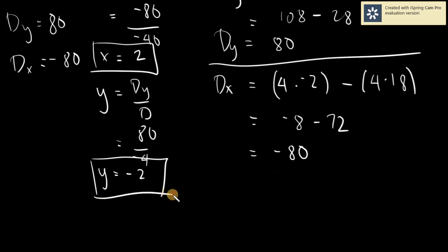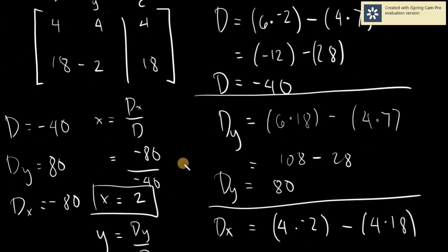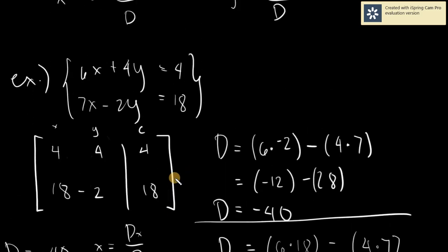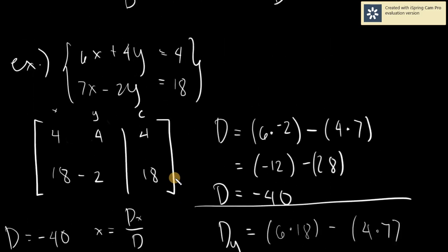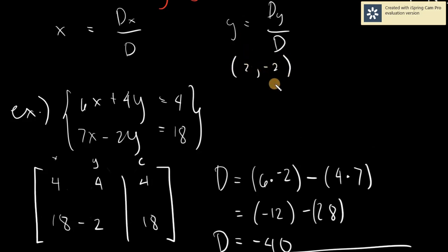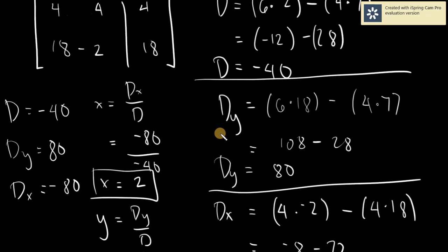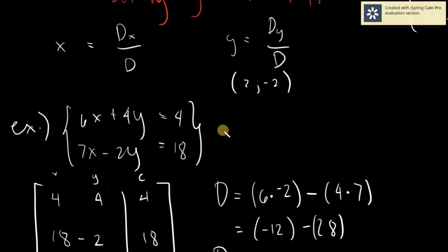For me, determinants are somewhat easier because you are just simply dealing with numbers only — no variables anymore. You know that your solution is x equals 2 and y equals negative 2.